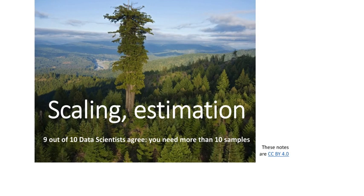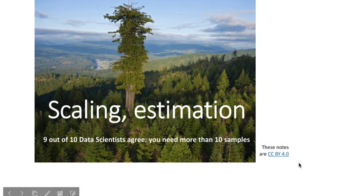My name is Ben and this is a lecture on scaling and estimation for Data 601 at UMBC. The title slide has two jokes on it. The first is a picture of a forest with one tree much taller than all the others, illustrating how an outlier disrupts your ability to estimate the average height. The second joke is the caption: '9 out of 10 data scientists agree you need more than 10 samples' — the comedy being that you surveyed only 10 data scientists to get that result.